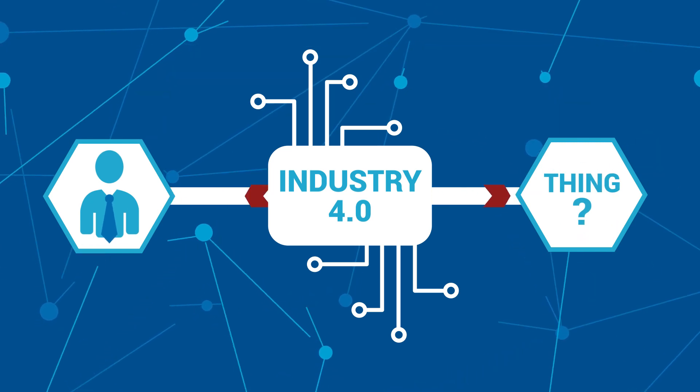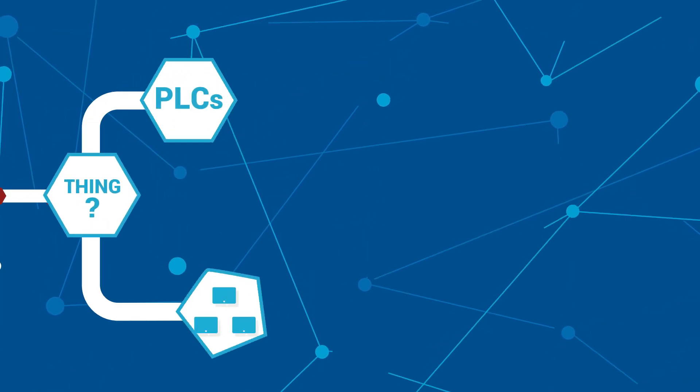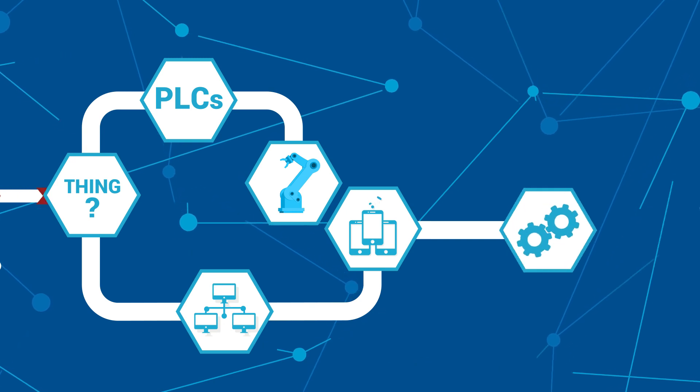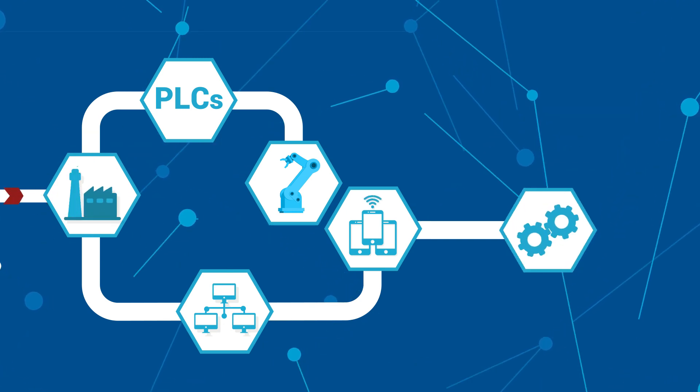But what are the things we are talking about? PLCs, computers, mobile devices, machines, and systems are some of the things in our manufacturing environment.